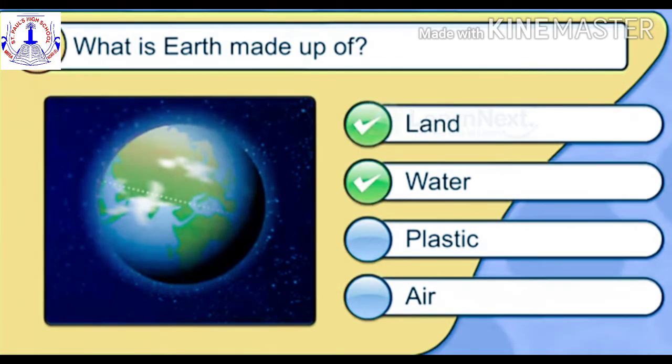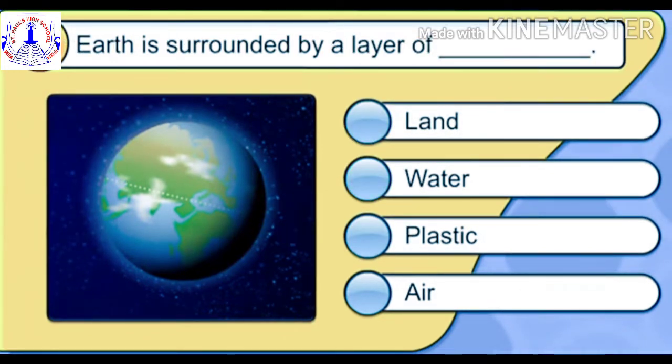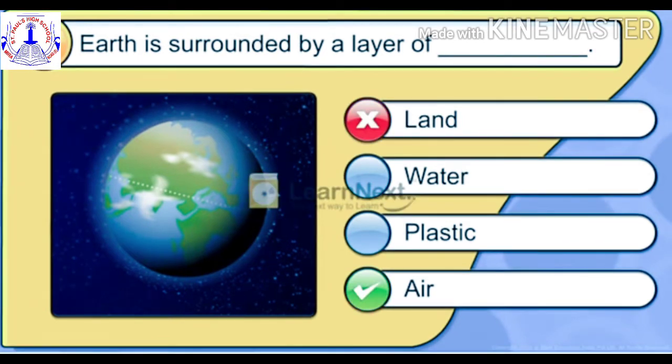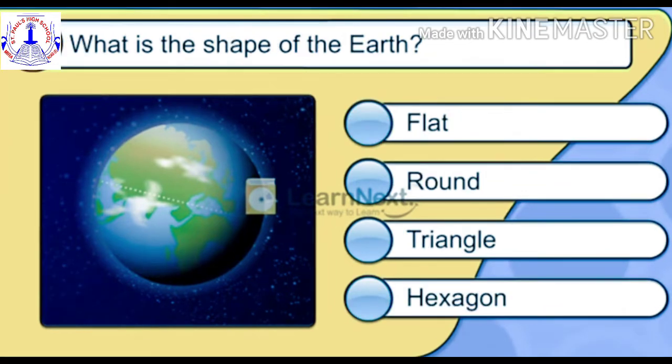Right, our Earth is made up of land and water. Third, Earth is surrounded by a layer of... Children, is it surrounded by a layer of land? No, our Earth is surrounded by a layer of air. Fourth, what is the shape of the Earth?